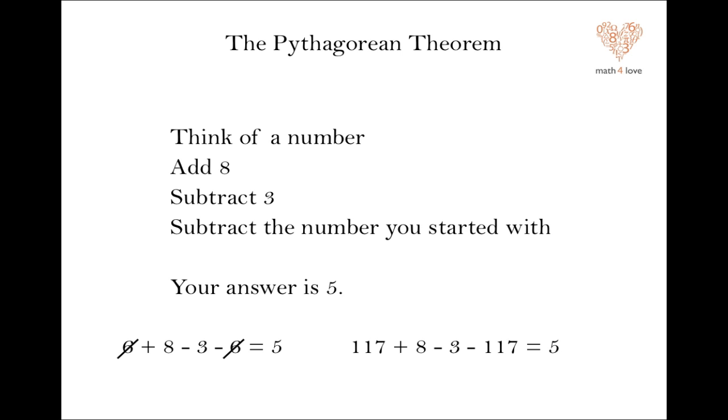That cancels out. All I've got here is the adding eight and the subtracting three. Of course, that's going to be five. Well, let's say my original number was 117. Well, again, I'm adding 117 and subtracting 117. My answer is still going to be five, just that plus eight minus three. In fact, whatever number I pick, call it x, I'm adding x and subtracting x, those are going to cancel out, I'm always going to get five.